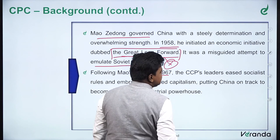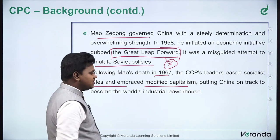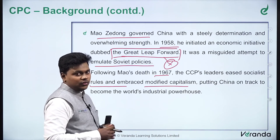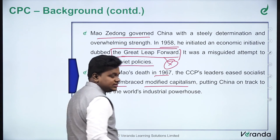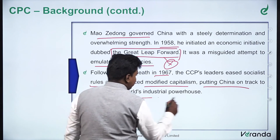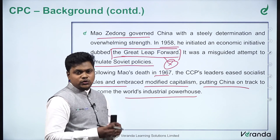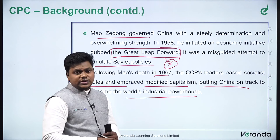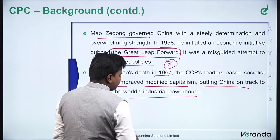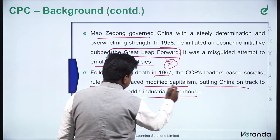Following Mao Zedong's death, the CCP's leaders eased socialist rules and embraced modified capitalism. They found that progressing through a purely communist manner would not be sufficient for long-term growth, so they embraced modified capitalism — partially capitalist along with some features of a communist government — putting China on track to becoming the world's industrial powerhouse. The USSR continued with socialist policies but ultimately disintegrated in 1991. By comparison, China was successful because its leaders were visionaries who changed the country's economy to a modified capitalist model.